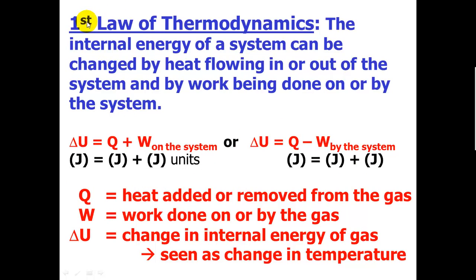It says the internal energy of a system can be changed by heat flowing in or out of the system, and by work being done on or by the system. We usually see this equation written two ways. Delta U equals Q plus W on the system. This is all measured in joules in the SI system, or calories in the English.